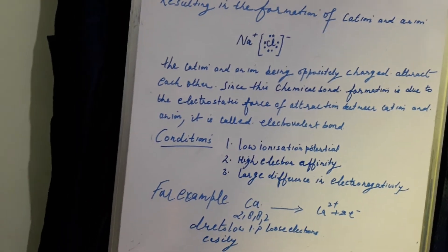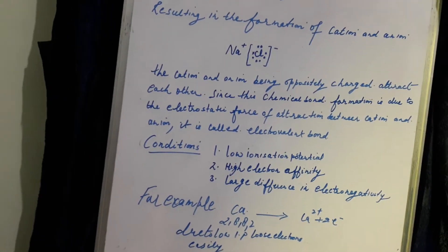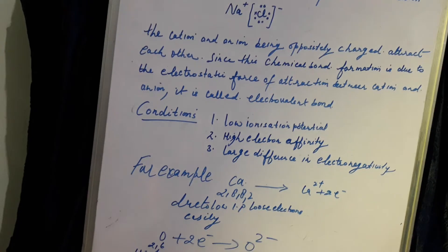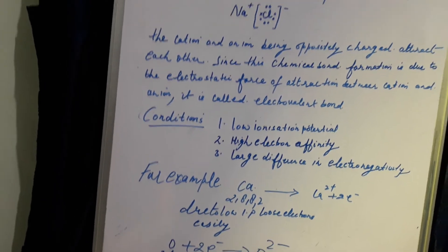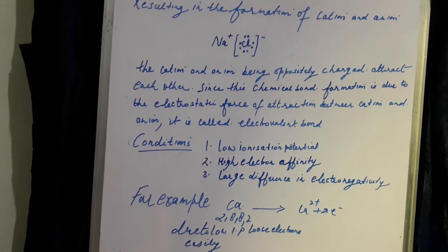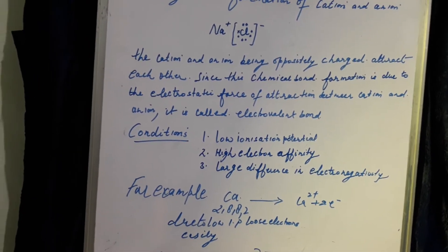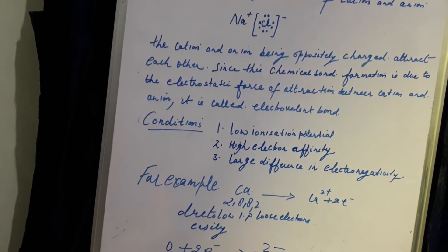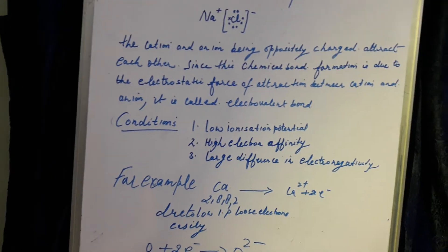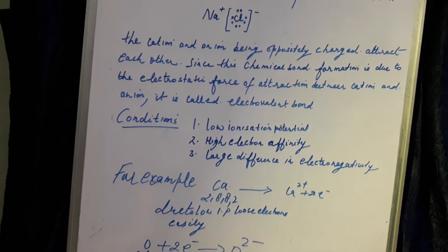So what are the three conditions needed for the formation of an electrovalent bond? Number one: low ionization potential. Number two: high electron affinity. Number three: large difference in electronegativity.